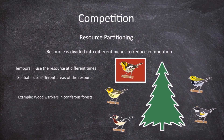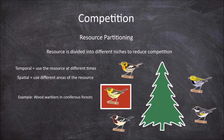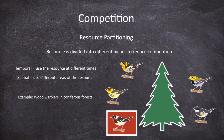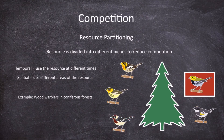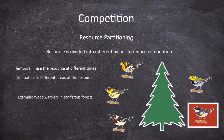The Blackburnian warbler spends most of their time feeding on the outer edges of the coniferous trees. The Cape May warblers spend most of their time feeding on just the upper outer edges of the trees. The Bay-breasted warblers feed mostly in the inner middle portions of the trees. The Black-throated green warblers feed mostly around the outer and slight interior of the middle portion of the trees. Finally, the Myrtle warblers, also known as the Yellow-rumped warblers, feed mostly on the middle interior and the lower and underneath portions of the trees.